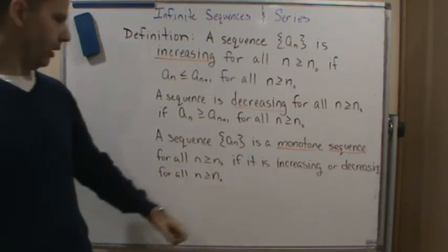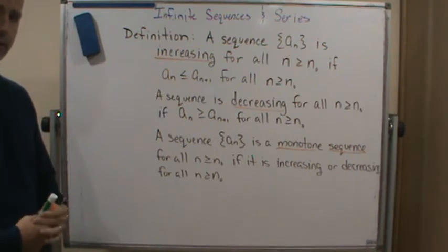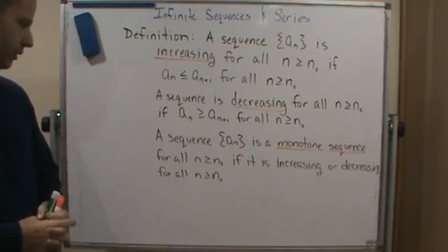So basically this is the definition of monotone sequence. If we have an increasing sequence or a decreasing sequence, we call it monotone. That's the definition.